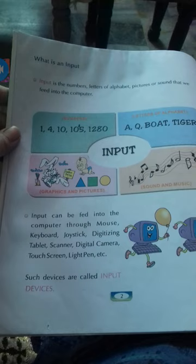Diagram mein aap ko yeh bataya gaya hai. Numbers mein, jaise numerical numbers ka kerti hai, koi bhi number fill karthi hai. Jaise one, four, ten, one hundred five, twelve hundred eighty — aise numbers likhi hoye hain.